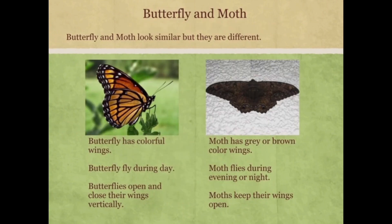Butterflies and moths look similar, but there are many differences. Butterflies have colorful wings, while moths have grey or brown colored wings. Butterflies fly during the day, while moths fly during evening or night. Butterflies open and close their wings vertically, but moths keep their wings open.